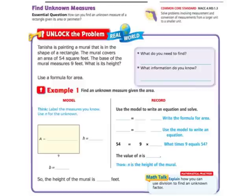13.4 is called Find Unknown Measures. We're still using what we learned about area and perimeter to be able to find unknown measures. So let me give you this example here. Tanisha is painting a mural that is in the shape of a rectangle. The mural covers an area of 54 square feet. So the area is 54 square feet. I'm going to take that information and write it in here right away so I don't forget that.